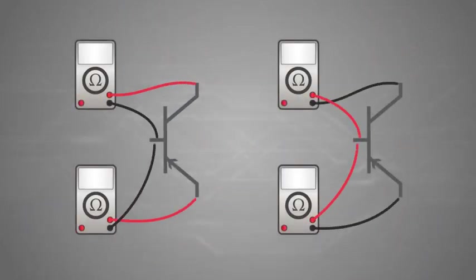Tested with a multimeter in the resistance or diode check modes, a transistor behaves like two back-to-back PN junctions, or better known as a simple diode.